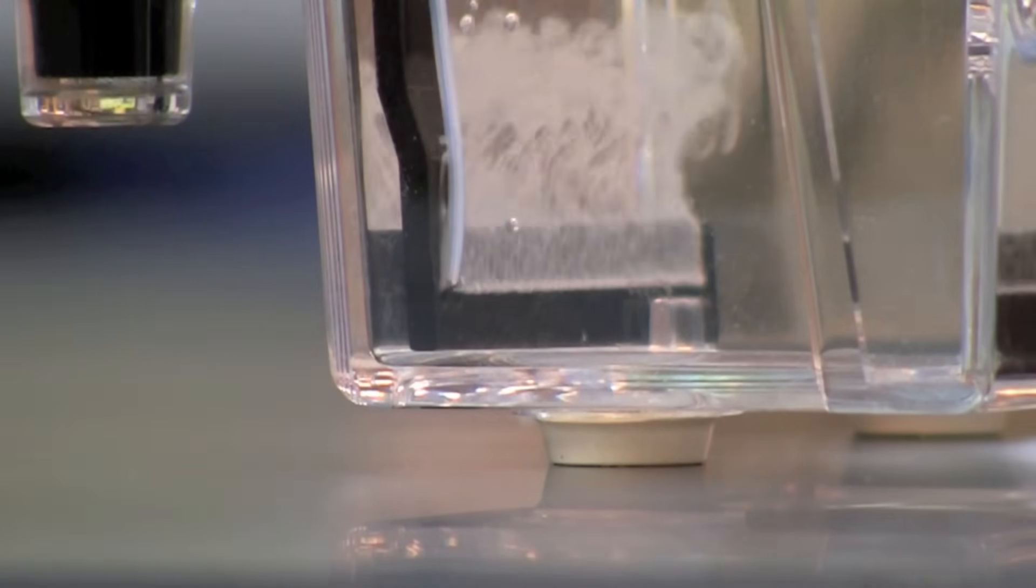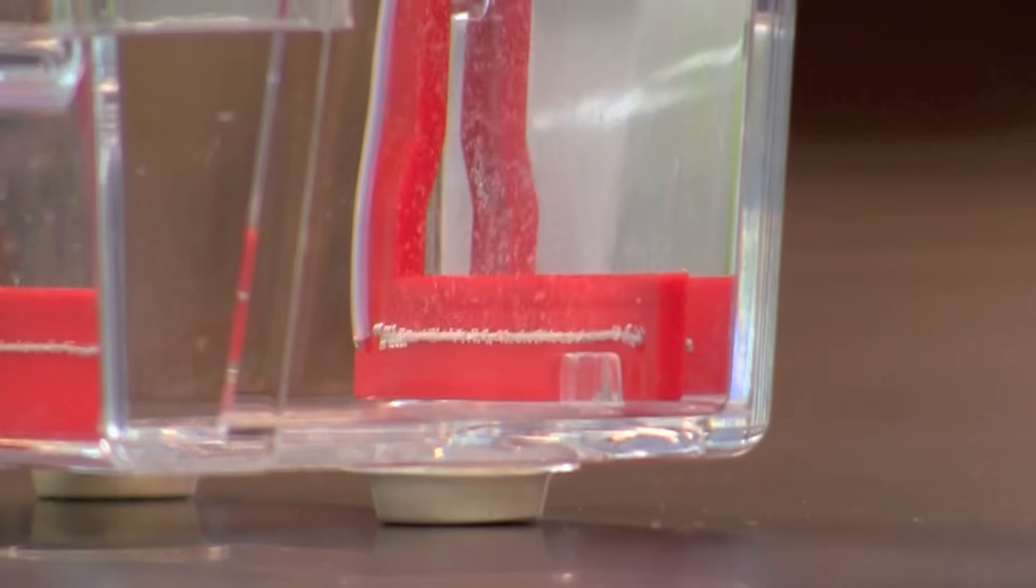At this point, you should be able to see bubbles coming from the wires at each end of the gel box. Notice that the positive or red electrode has fewer bubbles than the negative or black electrode.